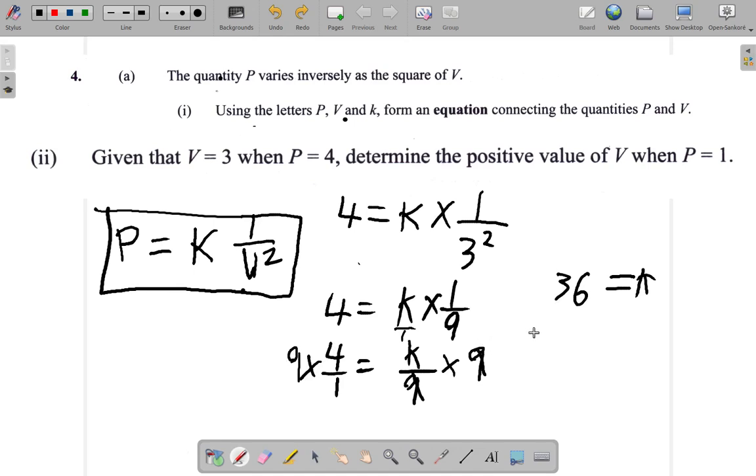So now we know that K is 36. Let me write it up here. K equals 36. Let me just erase this to make some space. Now, determine the positive value of V when P is 1. So again, we have P equals K times 1 over V squared.